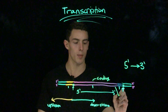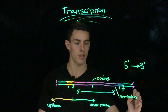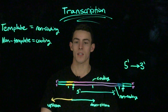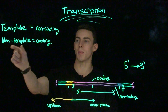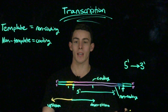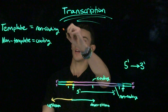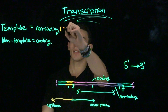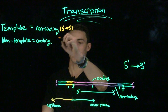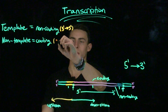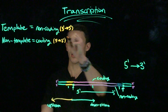We can also call the template strand the non-coding strand. Essentially, this can be condensed to: template equals non-coding, and non-template equals coding. Again, when we reference the position of the promoter, the template goes in the 3' to 5' direction, and likewise the non-template goes in the 5' to 3' direction.